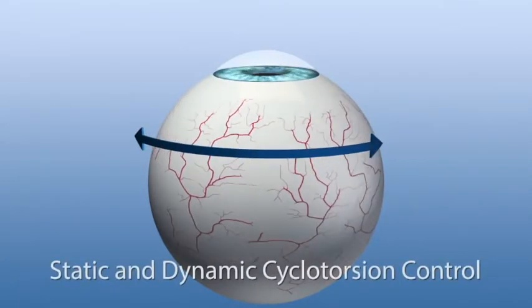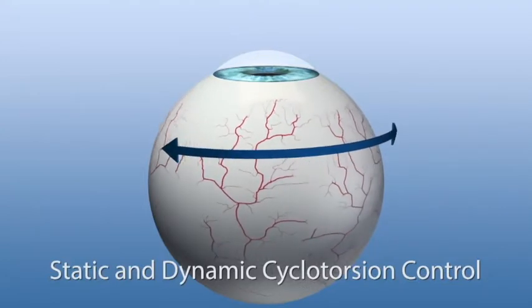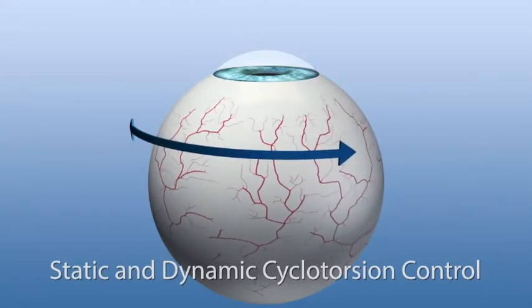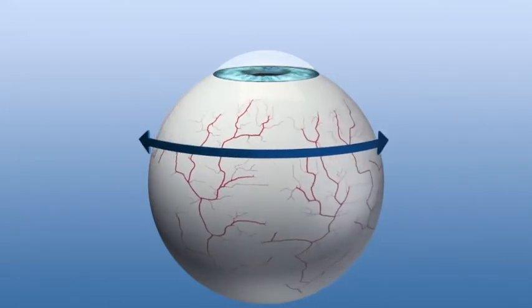Static and dynamic cyclotorsion control by the Schwind Amaris compensates for torsional differences of the eye between upright and supine positions of the patient, as well as torsional movements of the eye during laser treatment.